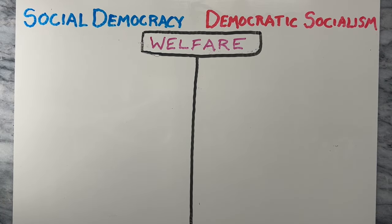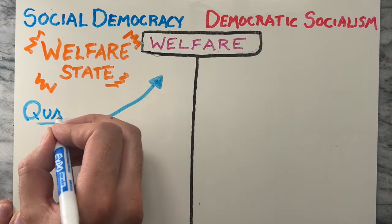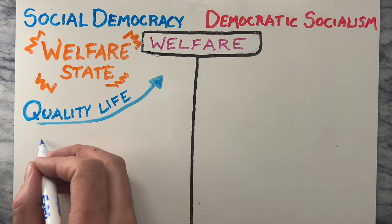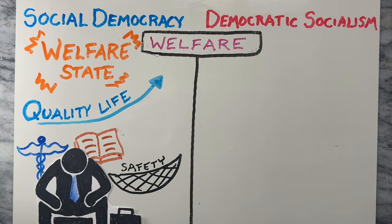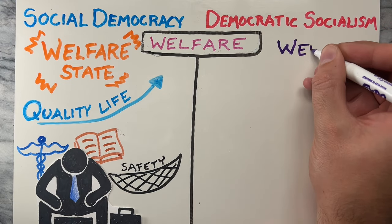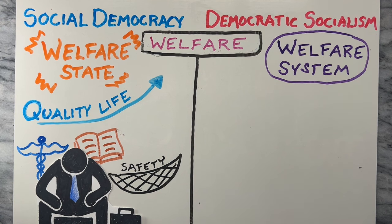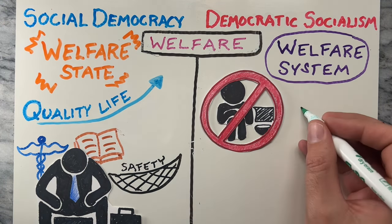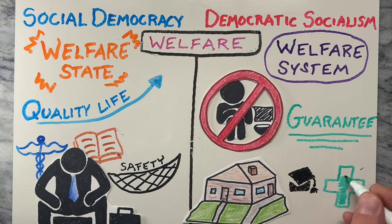Now on to the last comparison, let's take a look at welfare. Social democracies prioritize building a robust welfare state to ensure a high quality of life for their citizens. This includes universal health care, education, unemployment benefits, and various social safety nets. Similar to social democracy, democratic socialism also emphasizes a comprehensive welfare system. However, it goes further by aiming to eliminate poverty and guaranteeing access to basic needs like housing, education, and health care as a right.